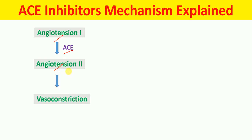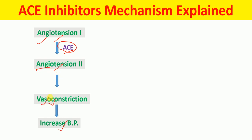Angiotensin 2 is the compound that causes vasoconstriction. And when blood vessels are constricted, that leads to an increase in blood pressure. ACE is the enzyme involved in conversion of angiotensin 1 to angiotensin 2, and angiotensin 2 causes vasoconstriction — constriction of the blood vessels — that increases blood pressure.